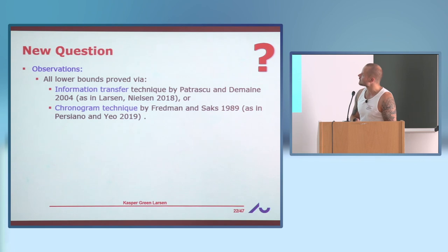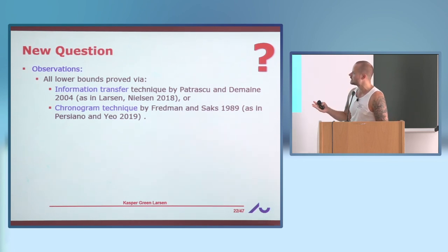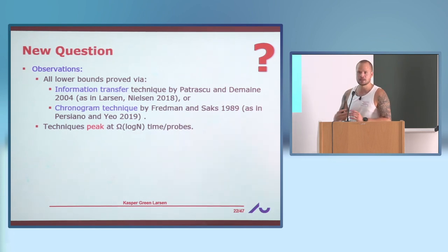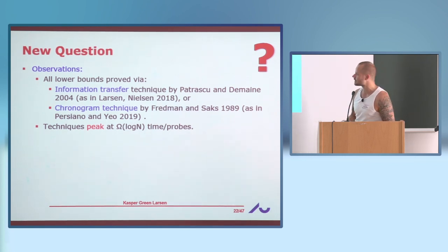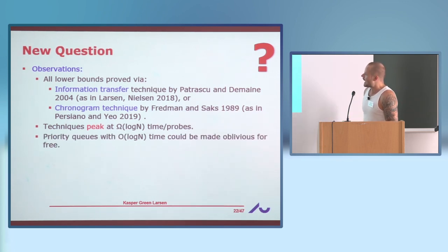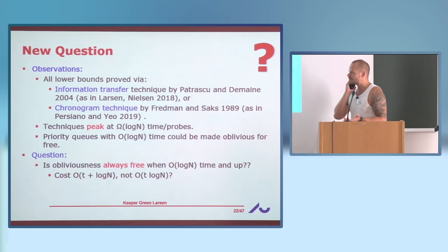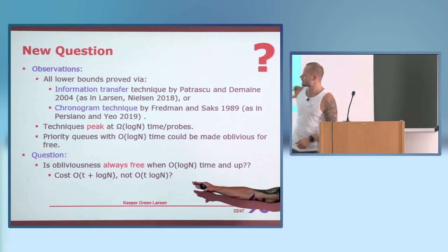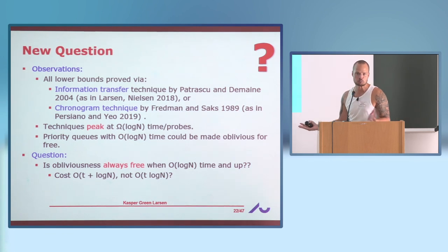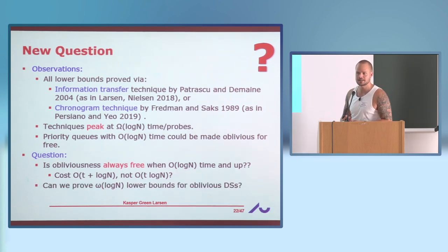For the second part of the talk, I'll motivate a new question. All the techniques we've seen — the information transfer technique and the chronogram technique — seem to peak at log N lower bounds. So you're not going to prove something stronger than log N regardless of the data structure problem. We observed the priority queue could be made oblivious without paying anything extra. So one question is: is obliviousness always free if you're already paying more than log N time per operation? Maybe the cost of being oblivious is the original time plus log N instead of the original time times log N. That's the open problem we tried to address in our next work.